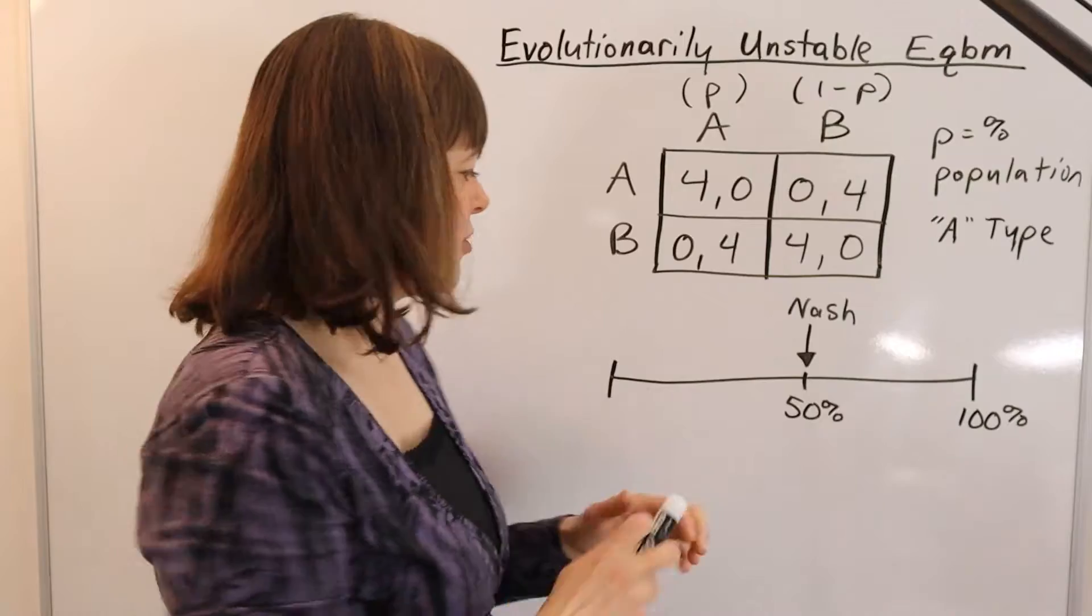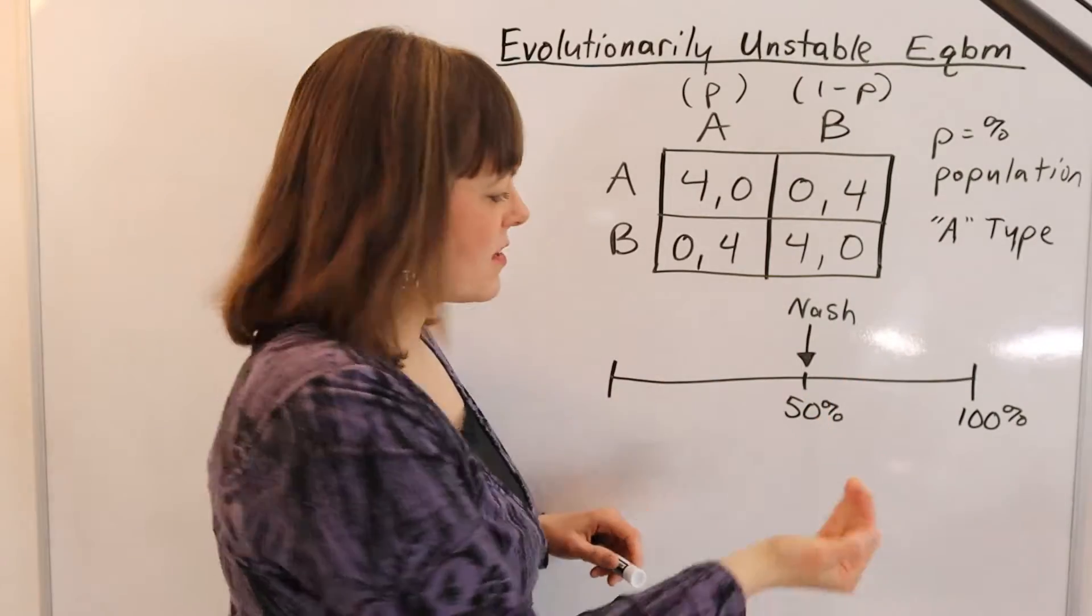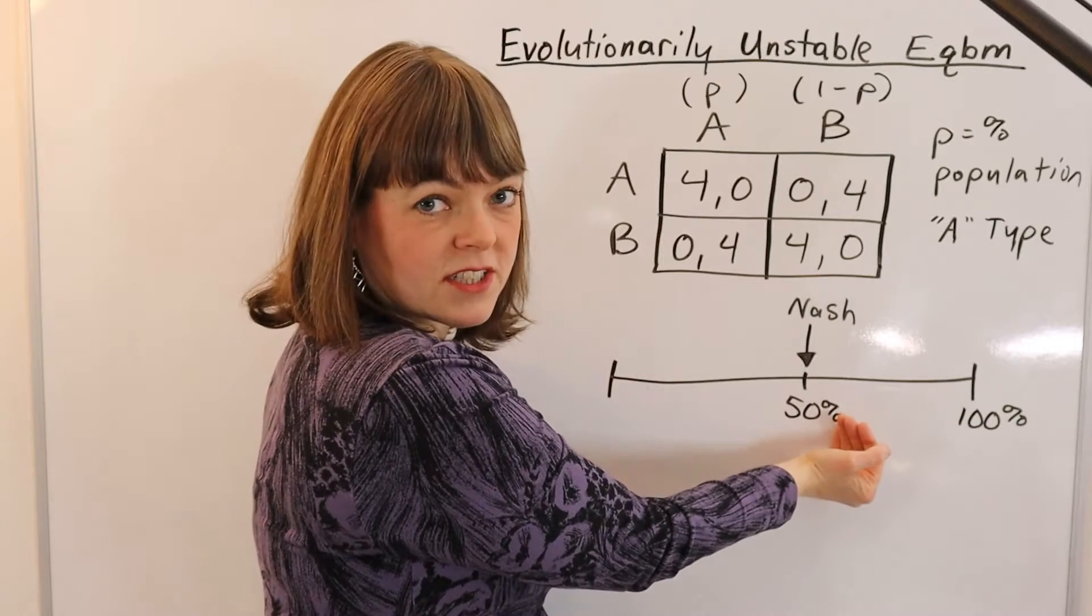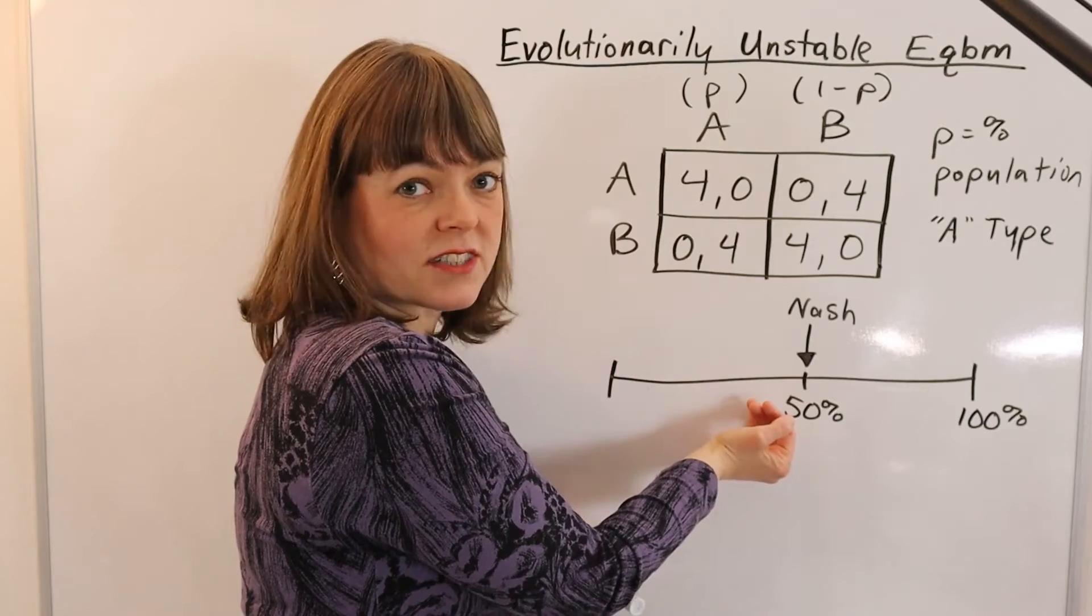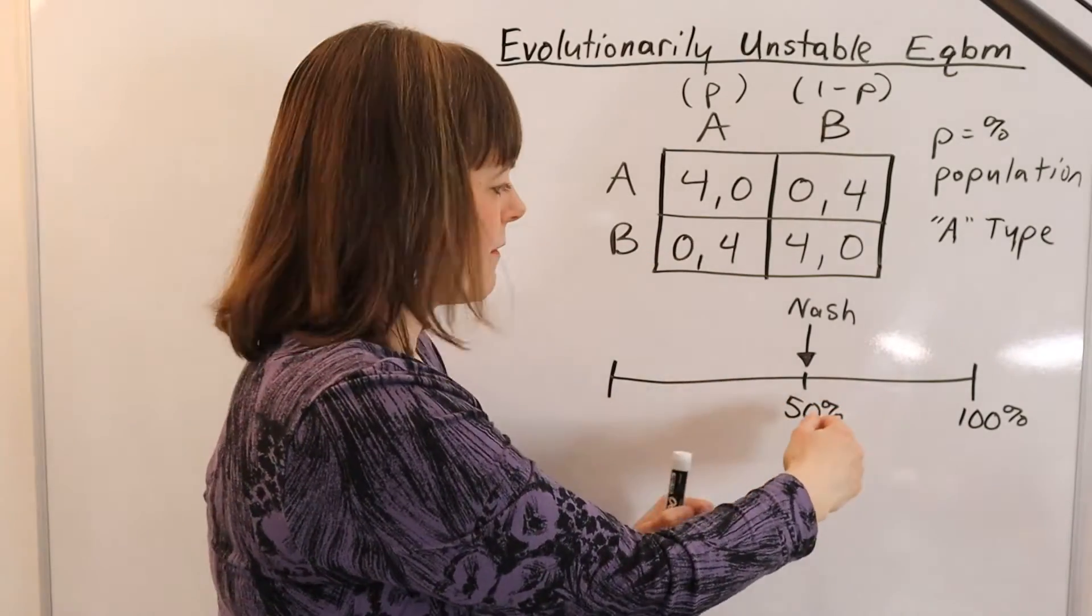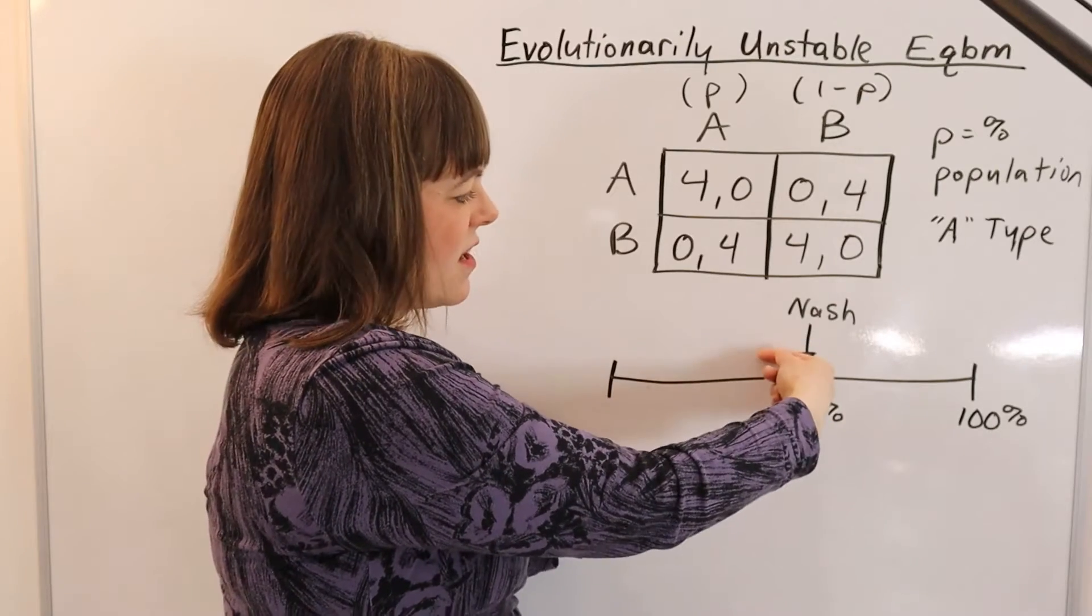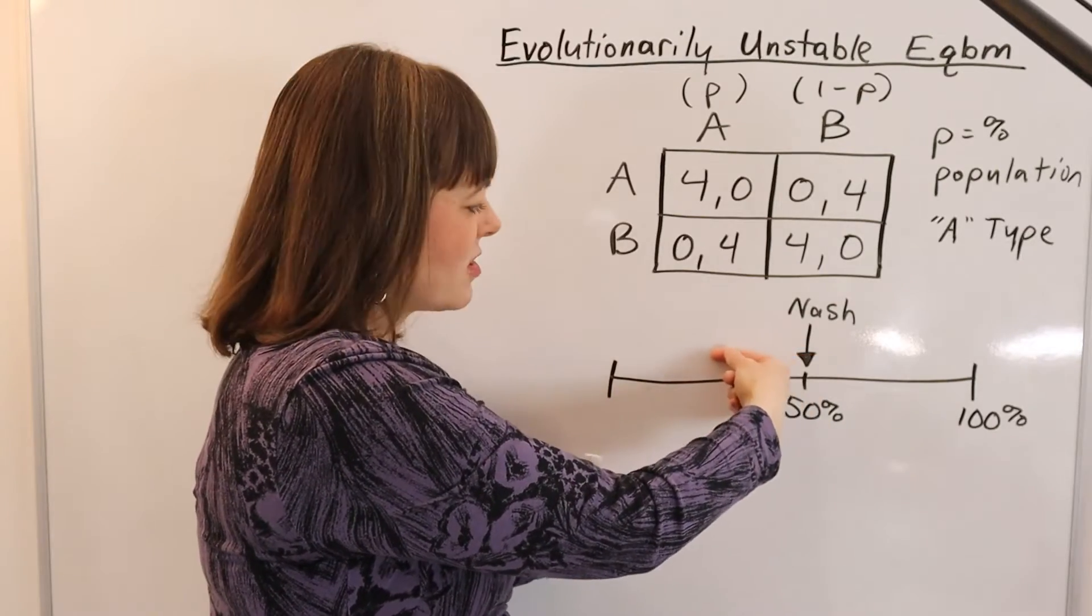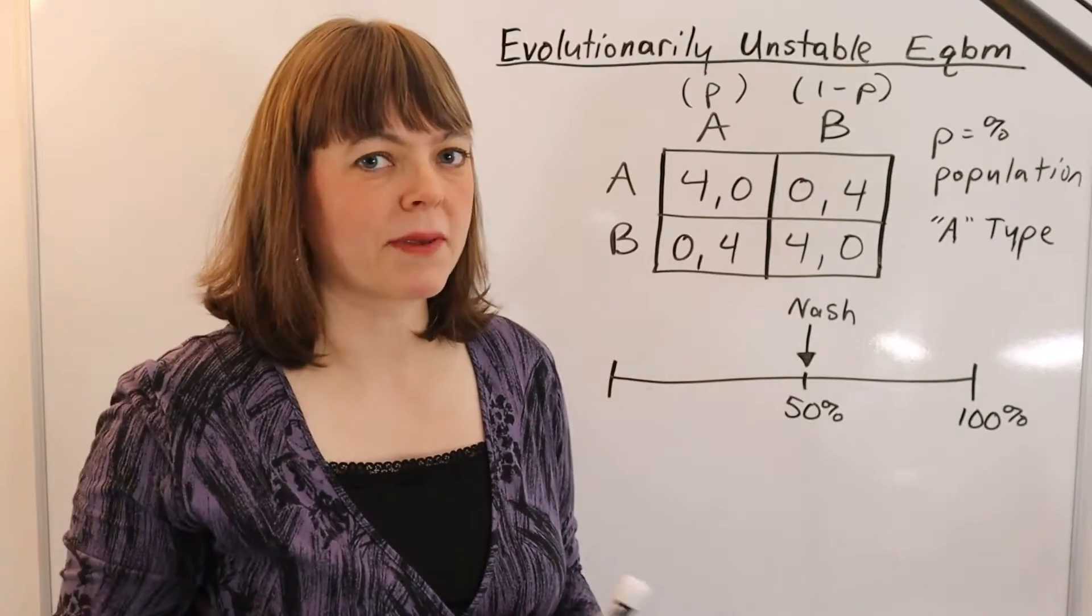However, if you have a situation where one generation, because of random variance, we get 51% of the population is type A, or 45% of the population is type A, the question is, will we tend back toward the 50%? Or will that bump away from 50% lead to an evolutionary process that eventually leads to zero percentage of the population being A or B?